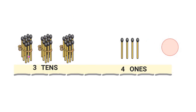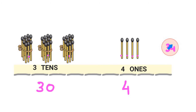I have 3 tens: 10, 20, 30 — that's 30 matchsticks. Plus 1, 2, 3, 4 — that's 4 more matchsticks. 34. I have 34 matchsticks in all.